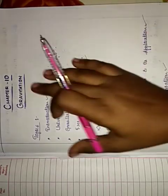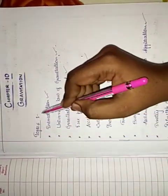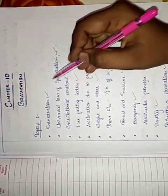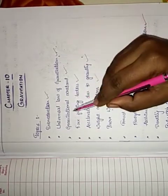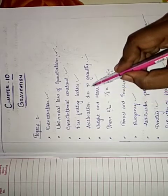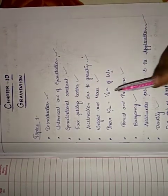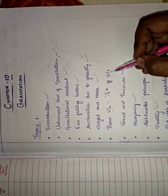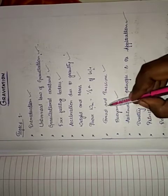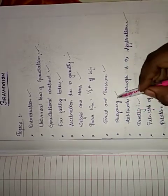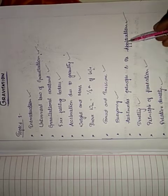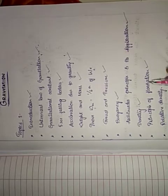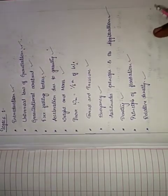Hello children, today we are going to start with Chapter 10, that is Gravitation. The topics we are going to cover are: introduction, universal law of gravitation, gravitational constant, free-falling bodies, acceleration due to gravity, weight and mass, proof that W_M equals one-sixth of W_E, thrust and pressure, buoyancy, Archimedes' principle and its application, density, principle of flotation, and relative density.